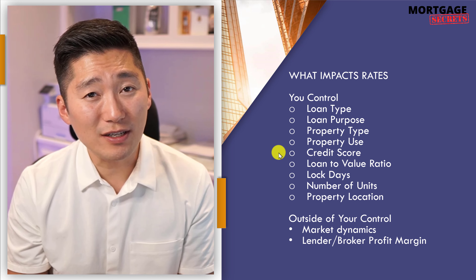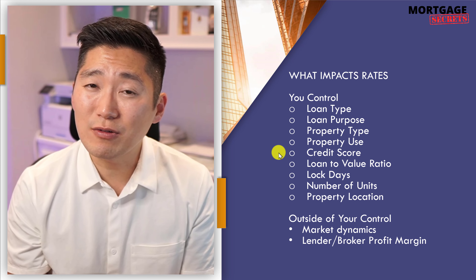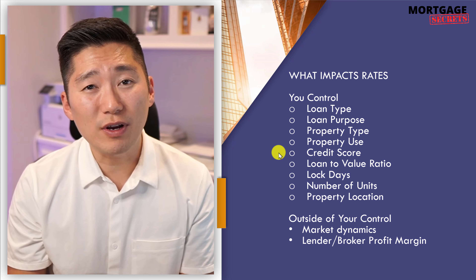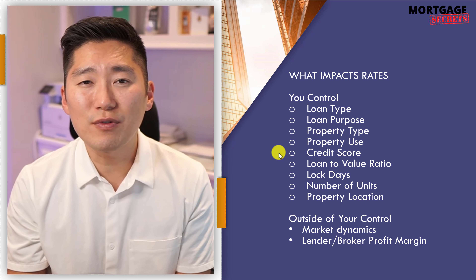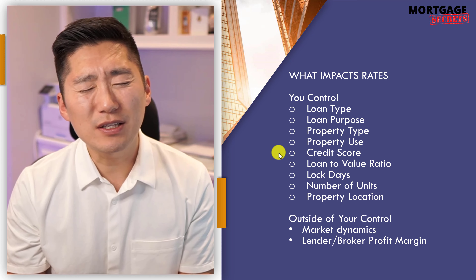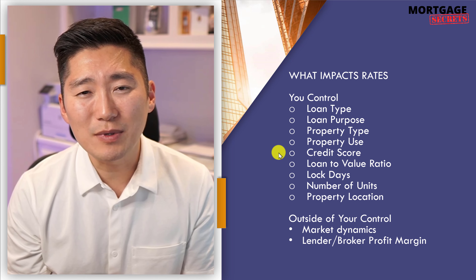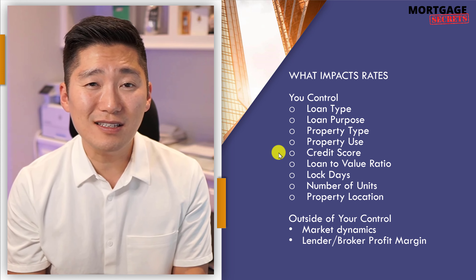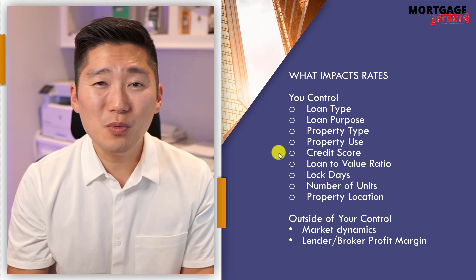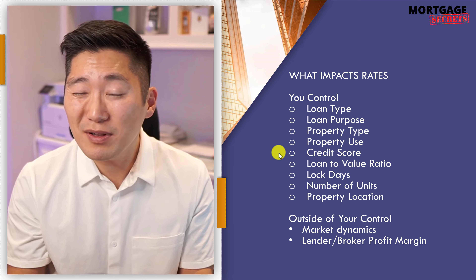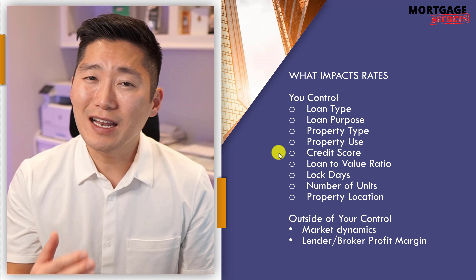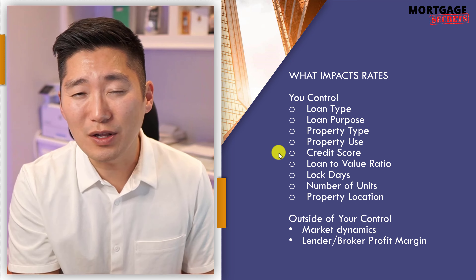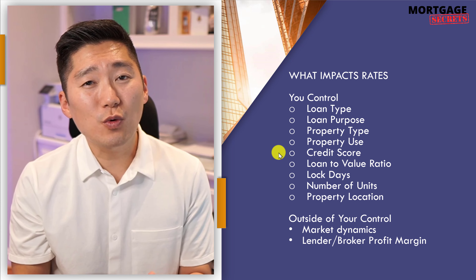Credit score: do you have high credit? In the mortgage industry, anything over 760 is going to be AAA credit. Sometimes lenders will give preferential treatment above 800, but it's very rare. Most of the time it's anything over 760. AA is roughly 740 to 760, A is 720 to 740, B-plus is around 700 to 720, and anything under 700 is going to be B, C, D, or F — and at F you don't qualify.